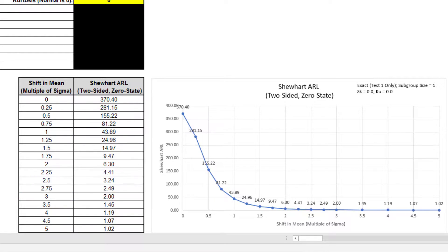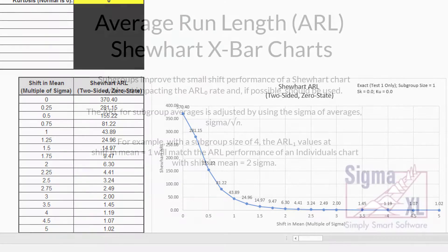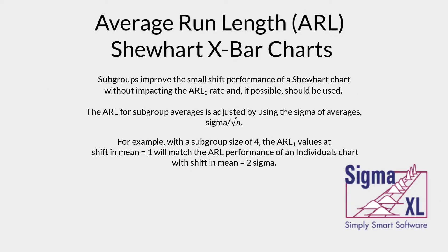Next we will consider Shewhart X-bar charts. Subgroups improve the small shift performance of a Shewhart chart without impacting the ARL zero rate, and if possible should be used. The ARL for subgroup averages is adjusted by using the sigma of averages, sigma divided by the square root of n. For example, with a subgroup size of 4, the ARL one values at a shift in mean equal to 1 will match the ARL performance of an individuals chart with shift in mean equal to 2 sigma.